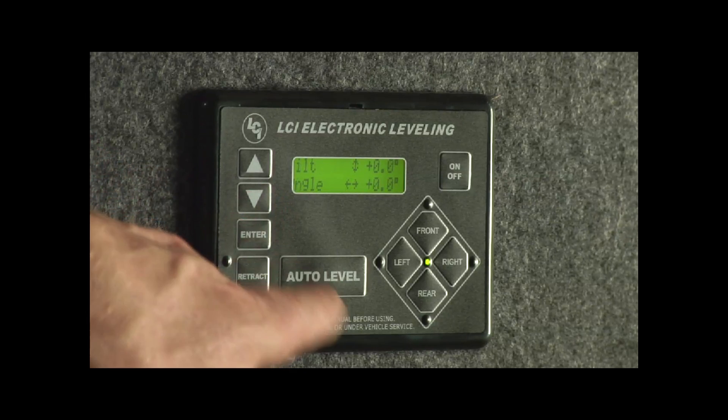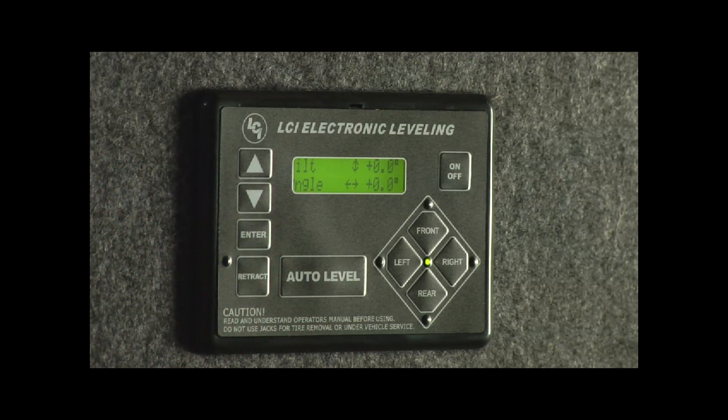The next screen is showing us our angle. Our tilt is 0.0 and our angle is 0.0. It's telling us that we're in a level condition. If we weren't in a level condition it would show us off one or two degrees.